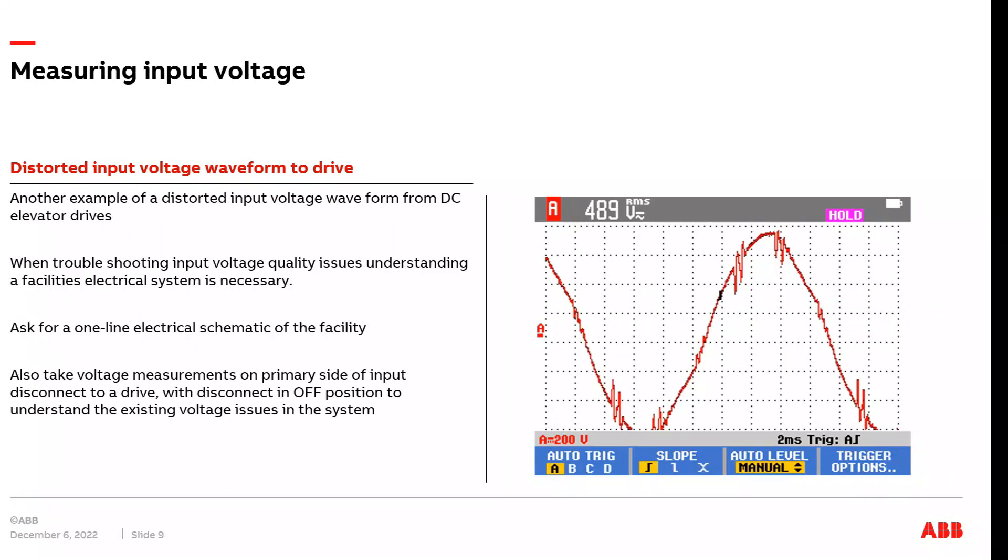The image on the right is another example of a distorted input voltage waveform to a drive. This screen capture was taken at a high-rise building in the city of Chicago. What we see here on this waveform, these vertical lines, are the distortion caused by elevators within the facility. When the elevators would run up and down, they would cause at times the VFD to actually trip on overvoltage due to the distortion and spikes that they're creating in the voltage waveform. The reason I bring up this example isn't just to show you a crazy voltage waveform, but it's actually to talk about when you get on a job site, it's important that you talk to the building owner or chief engineer and ask them for, for example, a one-line schematic of the facility.